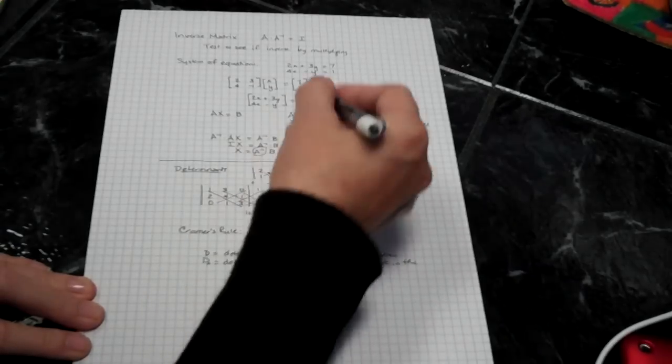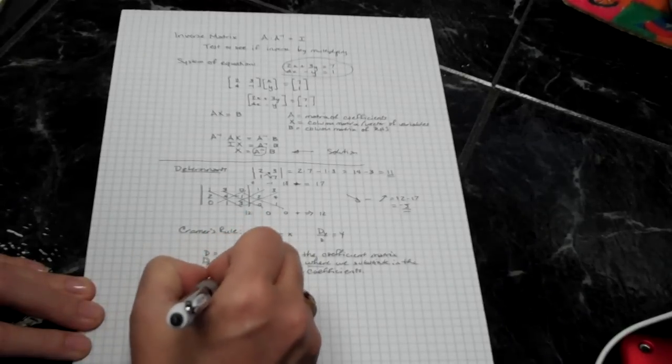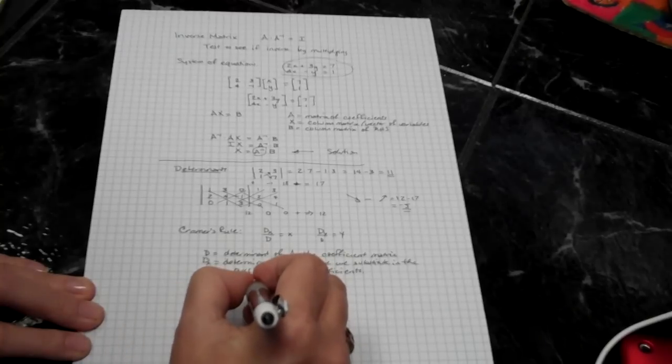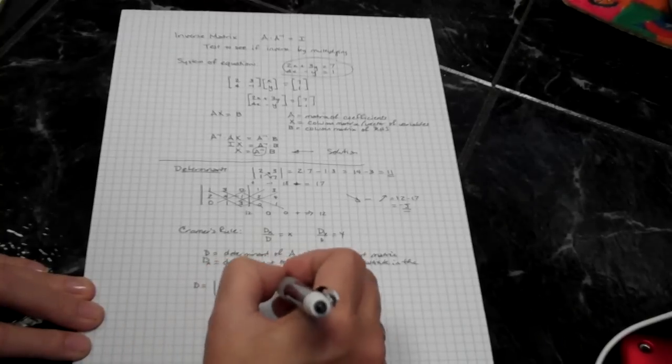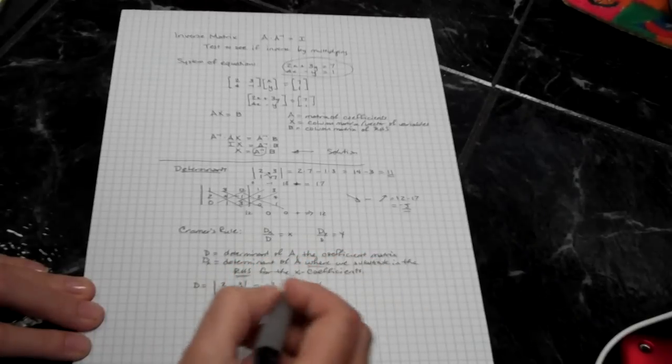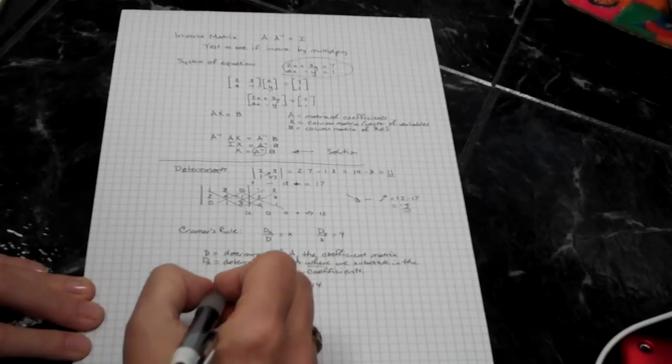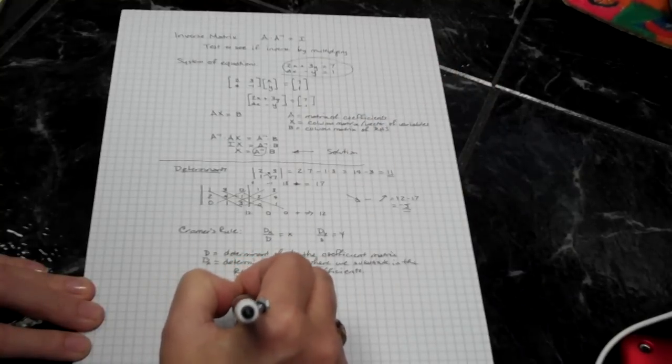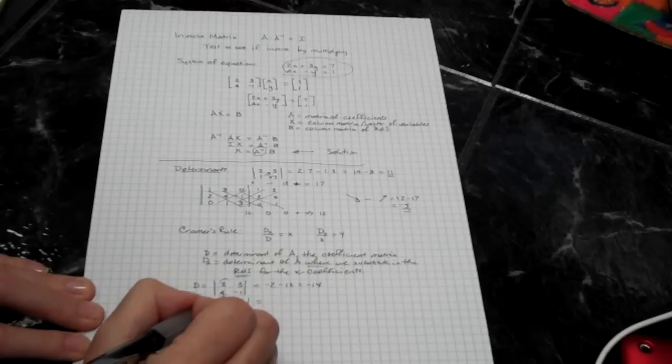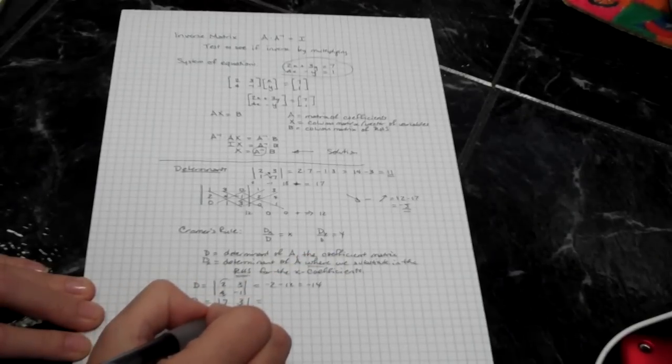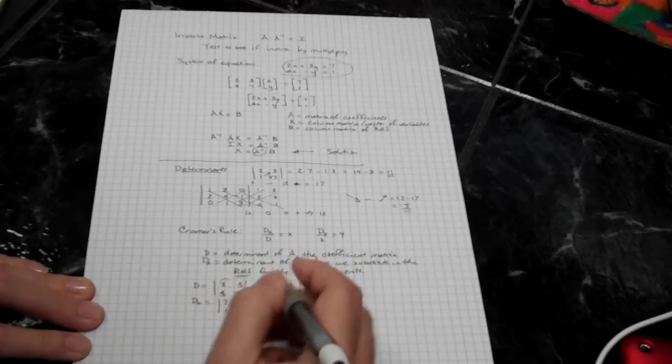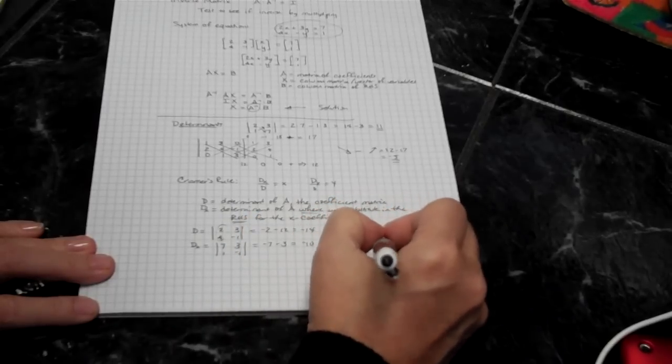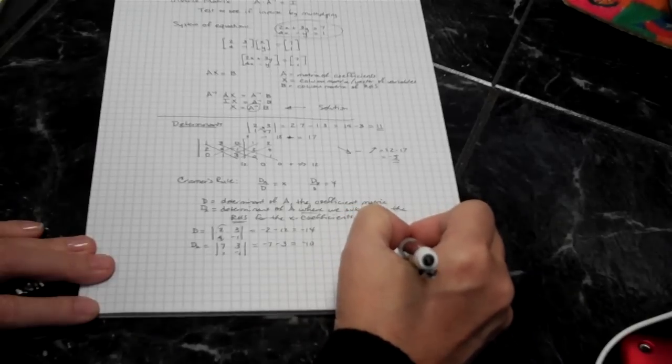So, looking at this little system up here, d is going to be 2, 3, 4, negative 1, because those are my coefficients. And so the value of that is negative 2 minus 12 is negative 14. dx, I'm going to take this and substitute in 7, 1. So 7, 1, 3, negative 1. And now then that I've substituted into the x position, do the determinant. So negative 7 minus 3 is negative 10. And so x is going to be negative 10 over negative 14, or 5 sevenths.